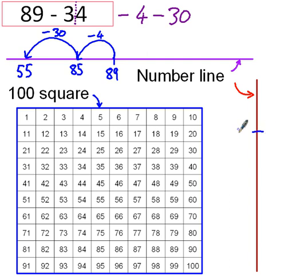On a vertical number line, very similar. 89 is my starting number, take away 4 first of all, and then take away 30. So 89 take away 4 is 85, and 85 take away 30 is 55.